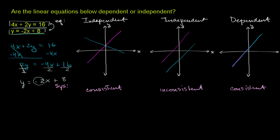So these are actually the exact same line. They both have the exact same slope and the exact same y-intercept — same slope, same y-intercept. So these equations are dependent.